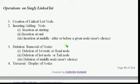The second operation is inserting or adding a node. Insertion in a singly linked list can be done in three ways: insertion at the starting (from the head node side), insertion at the end (from the tail node side), and insertion at the middle — that is, after or before a given node — based on the user's choice.